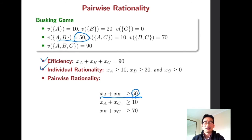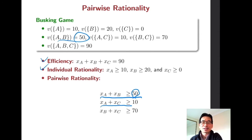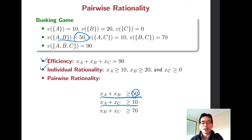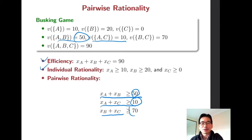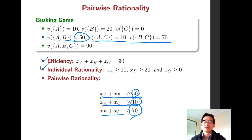Otherwise A and B would not agree on a certain allocation. Similarly, the sum of payoffs x_A and x_C should be greater than or equal to 10, from the value of that two-person coalition. And the sum of the payoffs of B and C should be bigger than 70, because B and C can generate 70 forming a two-person coalition.